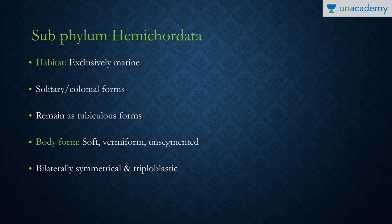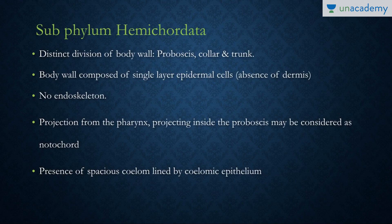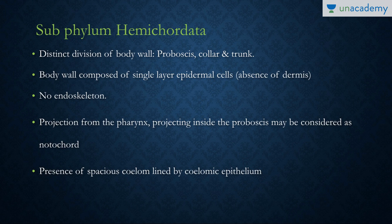Hemichordates are bilaterally symmetrical and triploblastic, having three germinal embryonic layers. The body is divided into three parts: the anteriormost proboscis, followed by the collar, and then the longer trunk. The body wall is composed of a single layer of epidermal cells — the dermis is absent and no endoskeleton is present. A projection from the pharynx into the proboscis may be considered a notochord, but a true notochord is usually absent. They also possess a true coelom lined by coelomic epithelium.